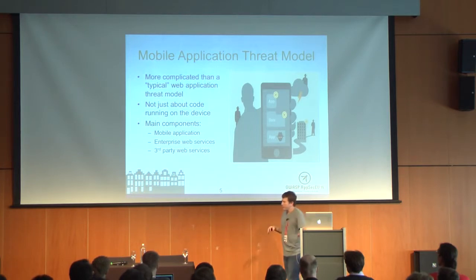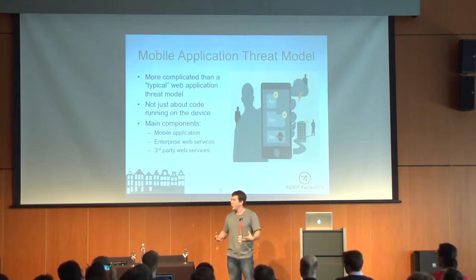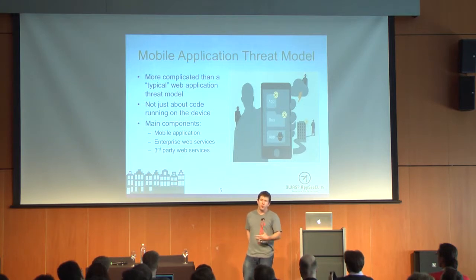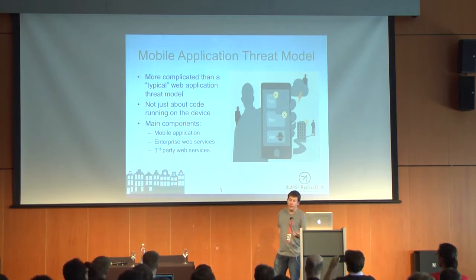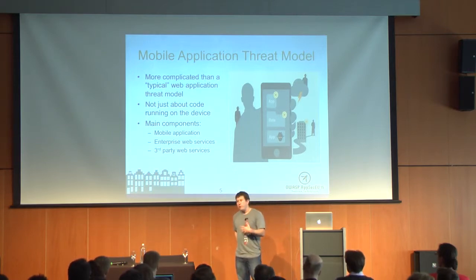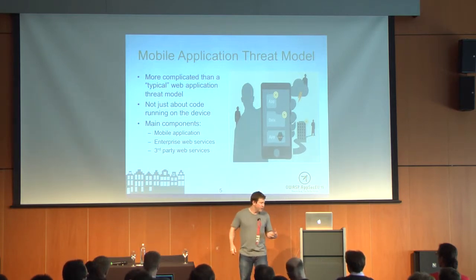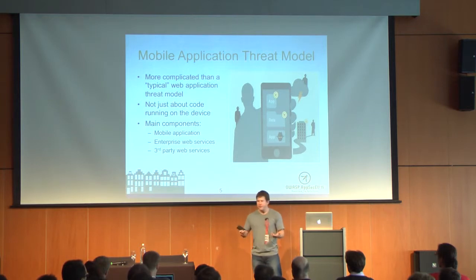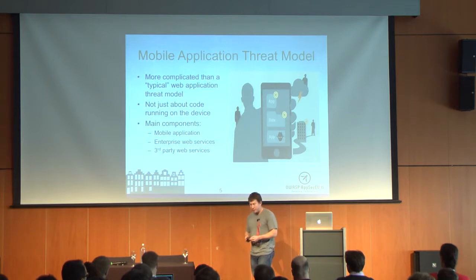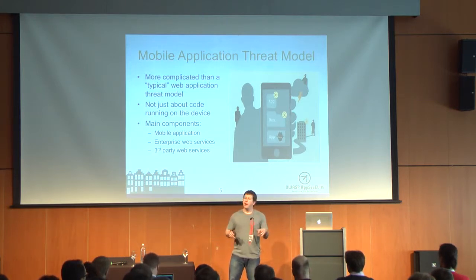The mobile application threat model we see the most: your application, or a portion of it, is running on the device. You've got code running on the device doing stuff, and you've also got data living on that device. One of the reasons that mobile security is so interesting is because the threat model is complicated. These mobile systems run on a piece of hardware that you probably don't control. You can try through your mobile device management to control those in your IT environment, but the vast majority of these applications are customer-facing.